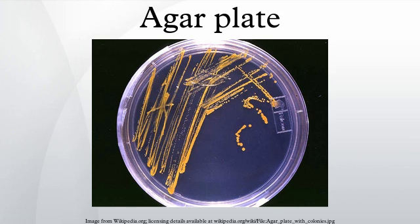Blood agar plates contain mammalian blood, typically at a concentration of 5–10%. BAPs are enriched, differential media used to isolate fastidious organisms and detect hemolytic activity. Beta hemolytic activity will show lysis and complete digestion of red blood cell contents surrounding the colony — examples include Streptococcus hemolyticus. Alpha hemolysis will only cause partial lysis of the red blood cells and will appear green or brown due to the conversion of hemoglobin to methemoglobin — an example is Streptococcus viridans. Gamma hemolysis refers to a lack of hemolytic activity.